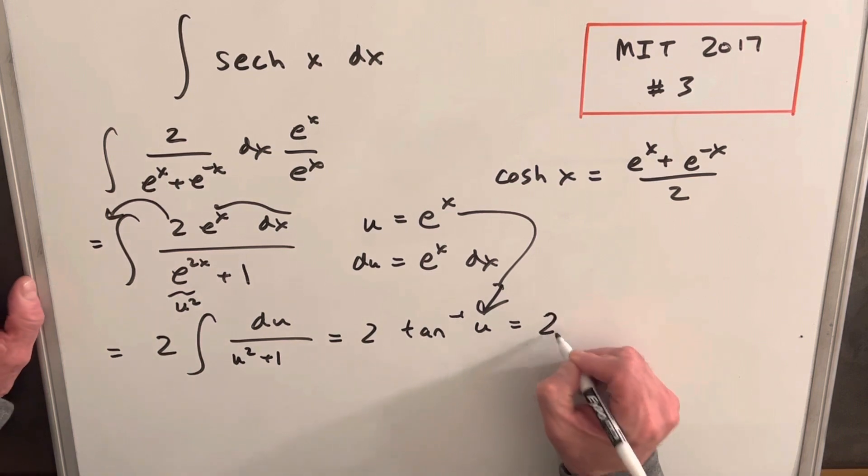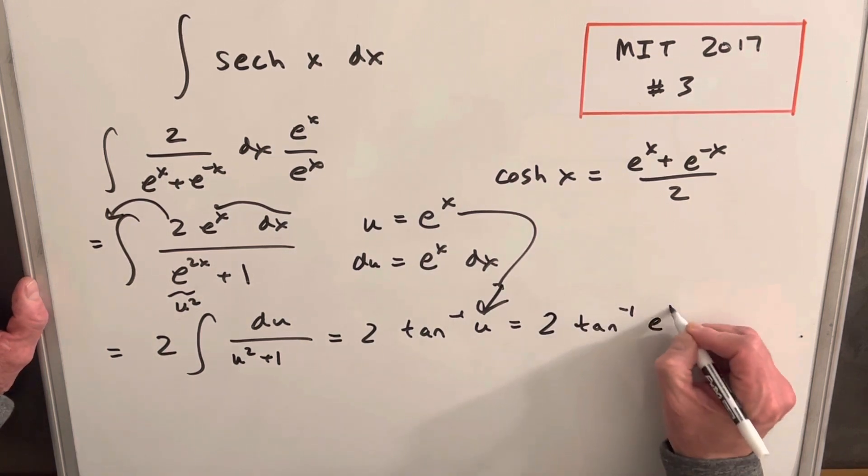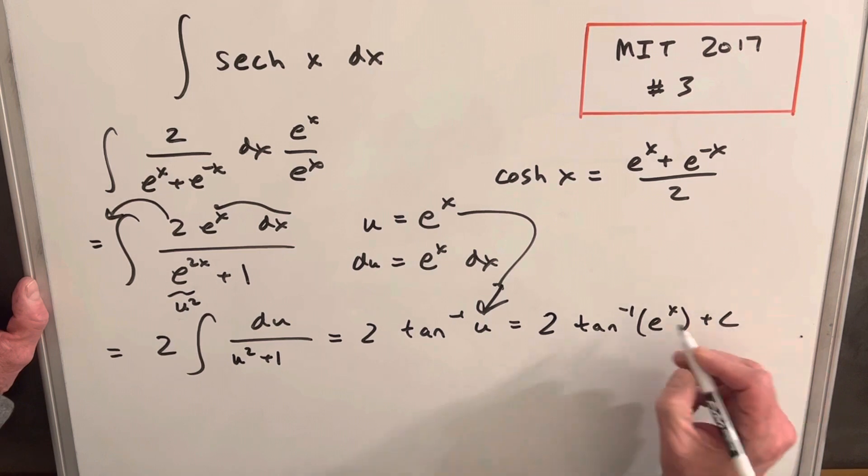So then for our final answer, we're going to have 2 tan inverse of e to the x plus c. And we're done.